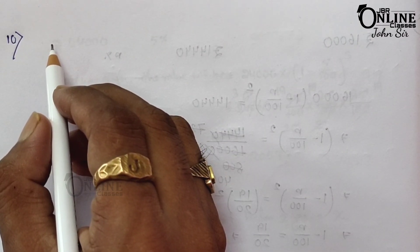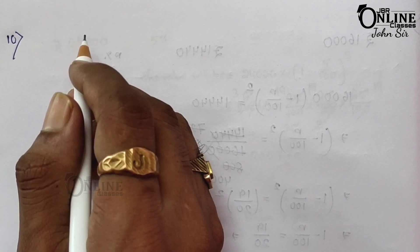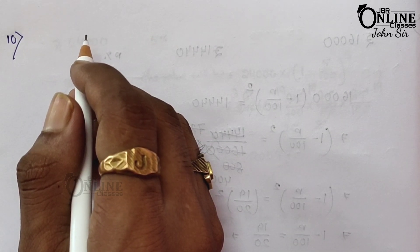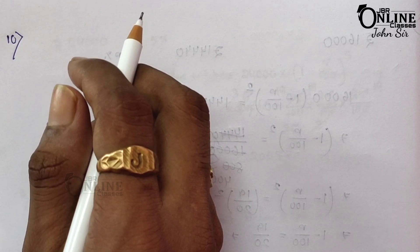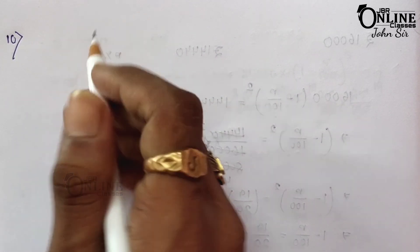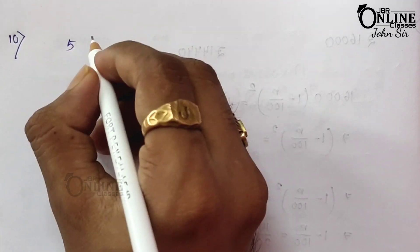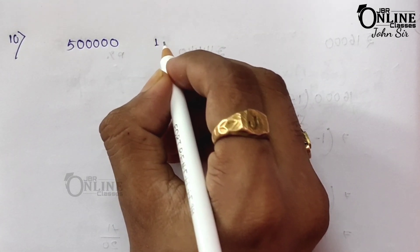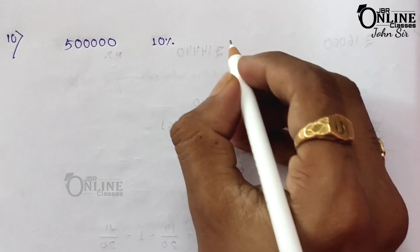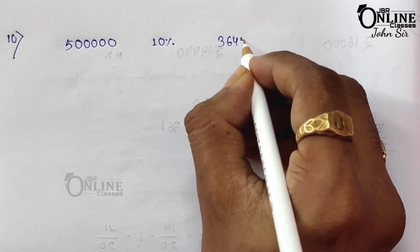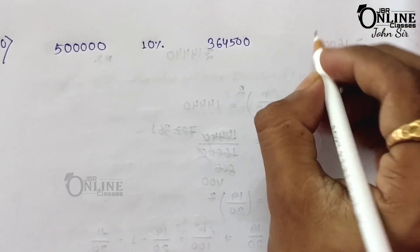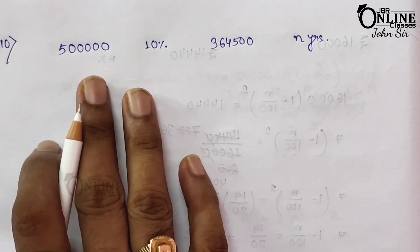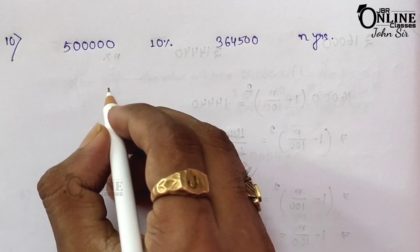Sum number 10: The value of a machine worth 5 lakh is depreciating at the rate of 10 percent every year. In how many years will the value be reduced to 3,64,500? Here the present value is 5 lakh, the rate of depreciation is 10 percent, and the future value will be 3,64,500. Let n be the number of years.